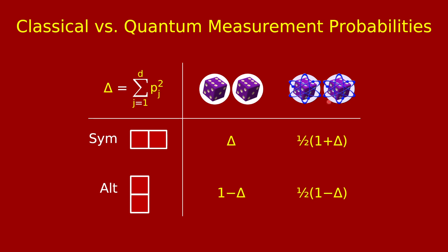We analyzed the probability of these two outcomes. The probability of getting two faces the same is delta, which is the sum of the squares of the p_j's, where p_1 through p_D are the die outcome probabilities. In the quantum case, we needed a measurement based on an orthogonal decomposition of a two-fold tensor product into the symmetric subspace and the alternating subspace, with probabilities one-half times one plus delta versus one-half times one minus delta. In both cases, this was good enough to distinguish a very rigged from a very balanced die with quite good confidence.